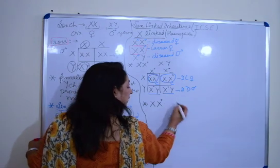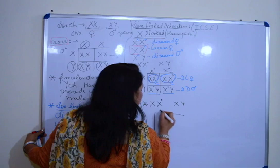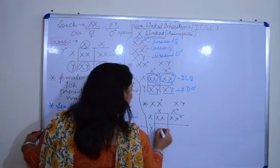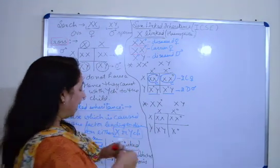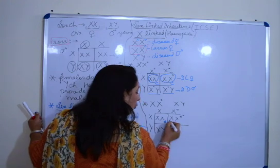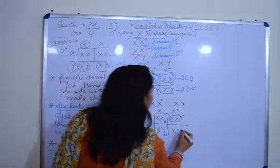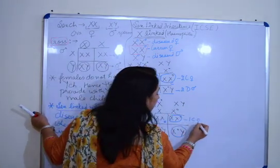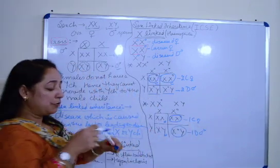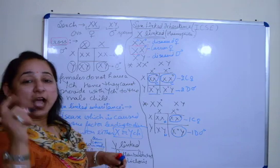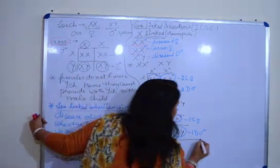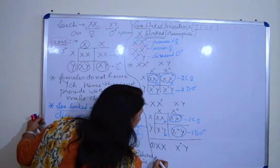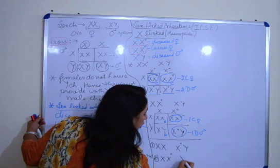Now suppose a carrier female is crossed with a normal male. Writing chromosomes for the carrier on one side and the male on the other, the result is: one normal female, one normal male, one carrier female, and one diseased male. Males always show the effect, so we get one carrier female and one diseased male from this cross. As homework, find the result when a normal female is crossed with a diseased male, and when a carrier female is crossed with a diseased male.